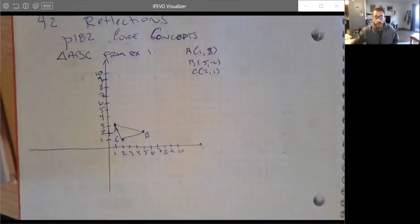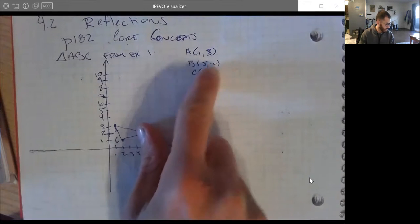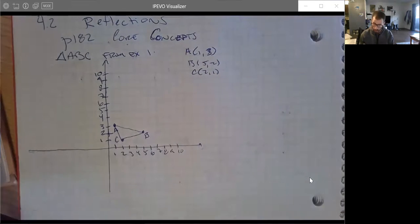You need to turn to page 182 and copy down the core concept at the top of the page. We are going to do numbers one through four in this video and then there'll be another video for the shapes. I actually got a head start so you probably want to pause at some point and catch up with me because numbers one through four all have to do with example one. So I did copy down triangle ABC from example one. They said that the vertices were A at 1,3, B at 5,2, and C at 2,1 and here we go.